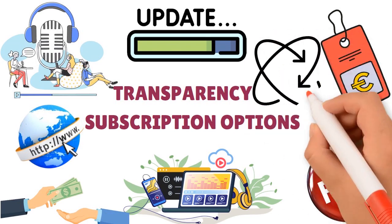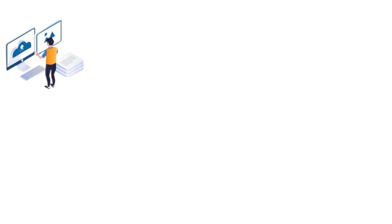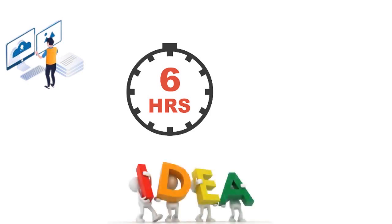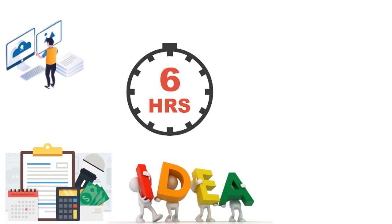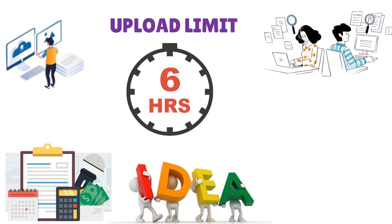Paid plans also let you add Buzzsprout's Magic Mastering tool for an additional fee, and plans are billed month to month so you can cancel at any time. All paid plans include unlimited storage and the ability to import podcast episodes from other sites for free. The main difference between plans is the amount of content you can upload monthly. For $12, upload three hours and pay $4 per additional hour. For $18, upload six hours and pay $3 per additional hour. For $24, upload twelve hours and pay $2 per additional hour. Have a clear idea of your upload needs and budget before subscribing.